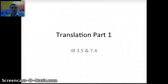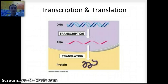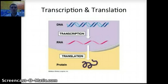In this video, we're going to begin our discussion about translation, and this will be broken up into two different parts. We're looking at IB 3.5 and 7.4 sections. Our first video looked specifically at transcription, and in these next two videos we're going to look more specifically at translation — taking the messenger RNA formed through transcription and using a ribosome and transfer RNA to actually make a polypeptide chain.